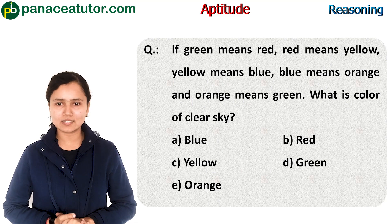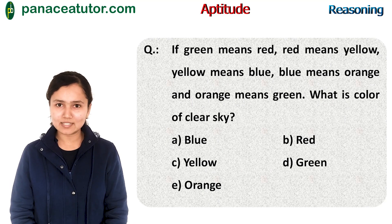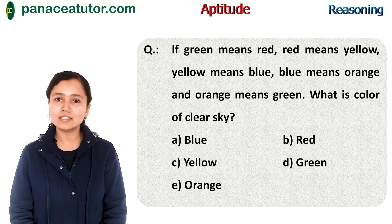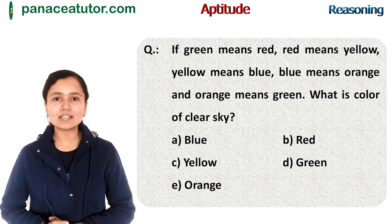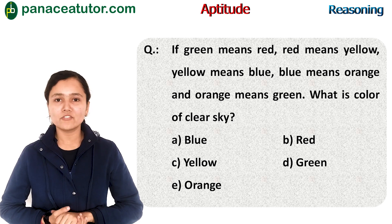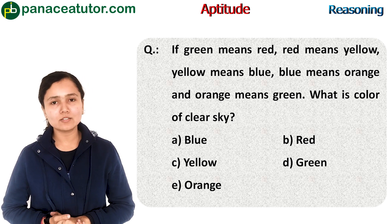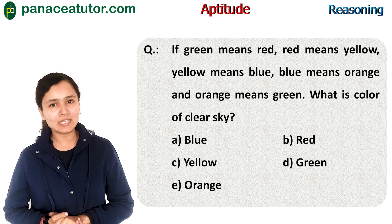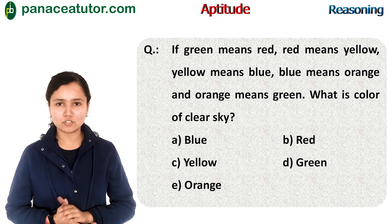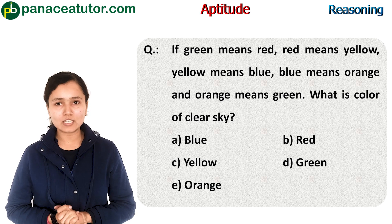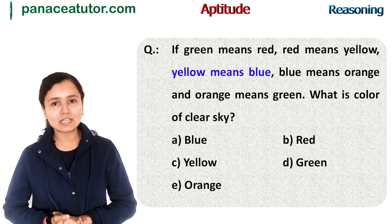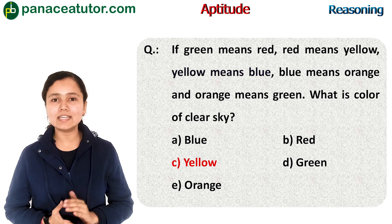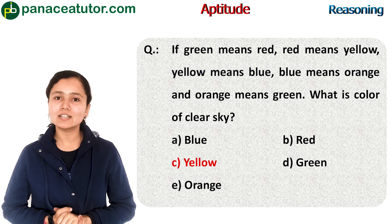Let's see a question on this concept. If green means red, red means yellow, yellow means blue, blue means orange, and orange means green — then what is the color of the clear sky? We know the sky is blue. Since the question uses 'means', we move in reverse. It is written 'yellow means blue', so our answer is the first one: yellow. That is option C.